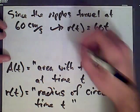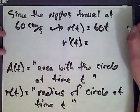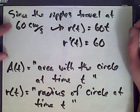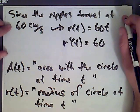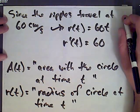And then what else do we know? We can take the derivative to get the rate at which the radius is changing. That's going to be 60, which is what we were given. It's telling us how quickly the ripples are traveling. In other words, how quickly is the radius changing?